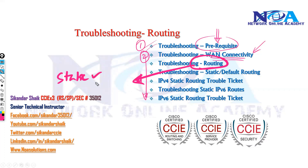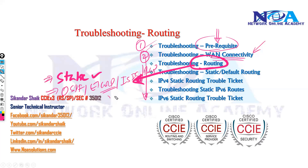We'll cover first what things to check if using static routing, and if using dynamic routing protocols like OSPF, that will be in a separate section. If using EIGRP, there are specific troubleshooting steps. We'll also cover other protocols like ISIS and BGP, and if you are doing redistributions or route filtering, those troubleshooting topics will be covered in different sections as part of the advanced routing topics.